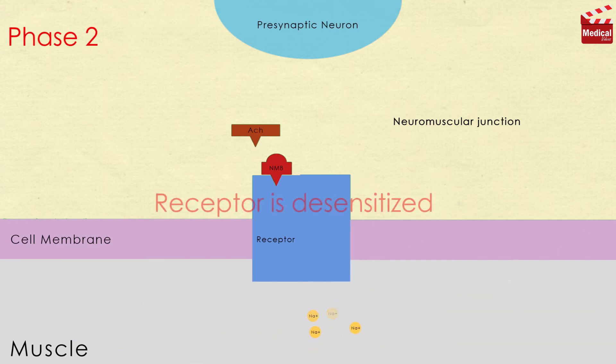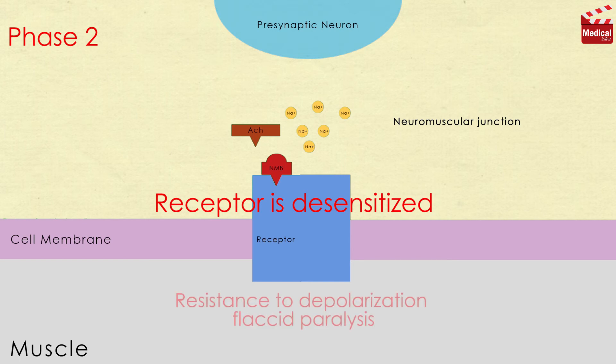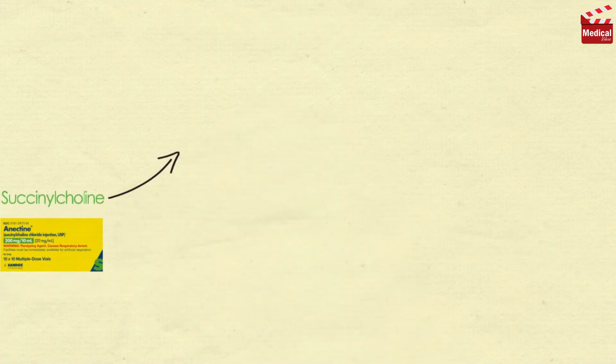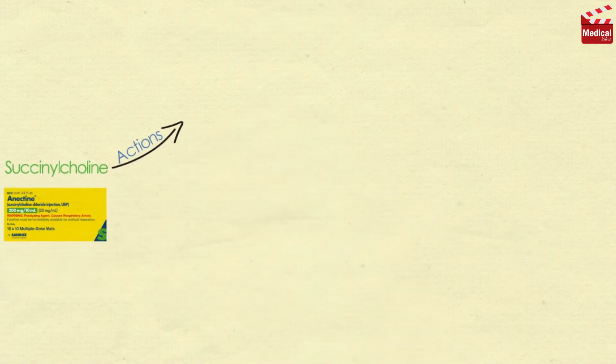Then phase two: The membrane repolarizes but the receptor is desensitized to the effect of acetylcholine. Continued binding and continuous depolarization renders the receptor incapable of transmitting further impulses, causing resistance to depolarization and flaccid paralysis. As with the competitive blockers, the respiratory muscles are paralyzed last.